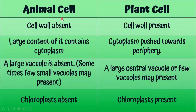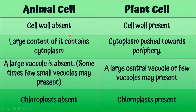Let's discuss the differences between animal cells and plant cells. The cell wall is absent in animal cells and present in plant cells. Animal cells contain a large amount of cytoplasm, whereas in plant cells the cytoplasm is pushed towards the periphery. A large vacuole is absent in animal cells — sometimes a few small vacuoles may be present. Chloroplasts are absent in animal cells and present in plant cells.